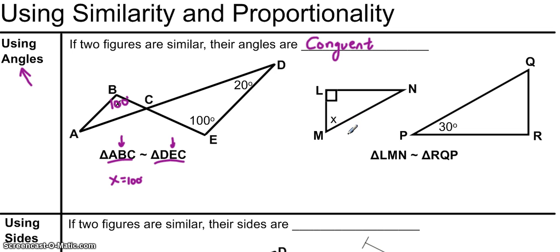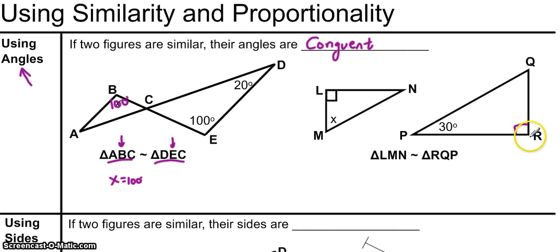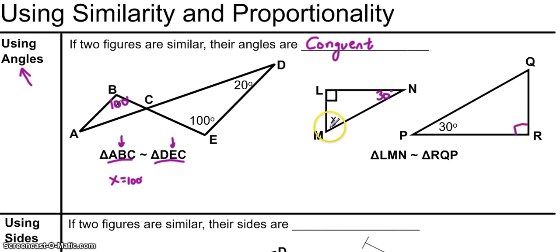Since triangle LMN is similar to triangle RQP, the first letters L and R show that angle L is congruent to angle R, so angle R is also 90 degrees. In addition, angle N will be congruent to angle P, so since angle P is 30 degrees, angle N is also 30 degrees. Now angle M, which is X, will be congruent to angle Q, but neither of those are labeled.